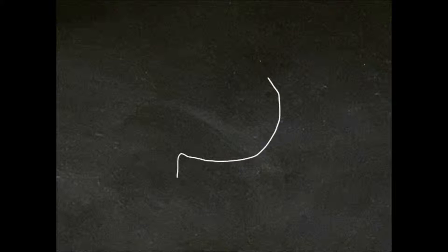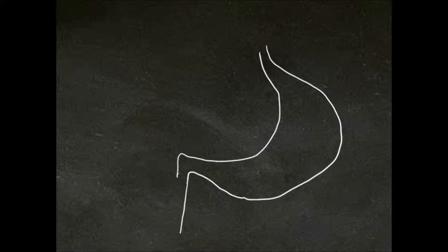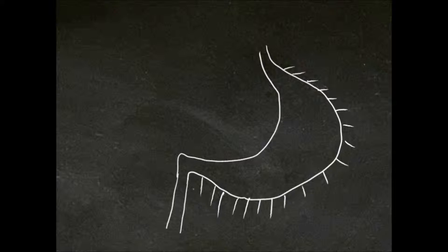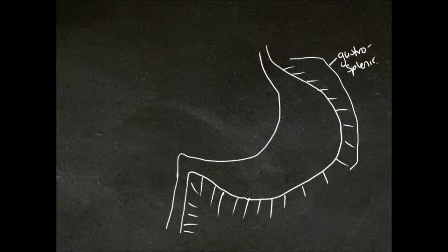Let's draw a picture so we can have a look at the greater omentum and the lesser omentum. Here is my stomach and the first part of my duodenum is here. The greater omentum is attached to the greater curvature of the stomach and the first part of the duodenum. From here to here is what's known as the gastrosplenic ligament, because your spleen is just here and it's attaching to the spleen.